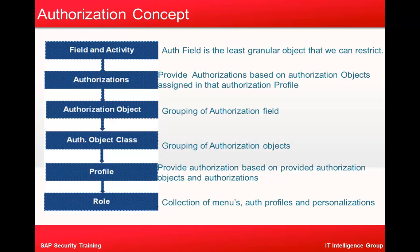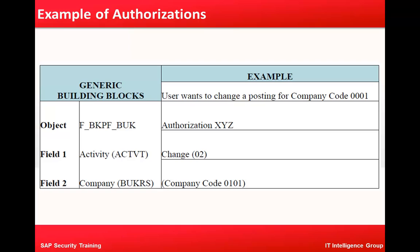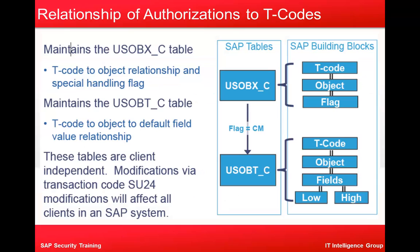We define roles based on the work structure and different departments. For example, a finance clerk trying to change a posting for company code 0001 requires three things: first, the activity which is 'change'; second, the authorization object — for example, authorization XYZ; and third, the company code field BUK. So those three things are the object, the activity you want to perform (display, change, etc.), and the specific company code.